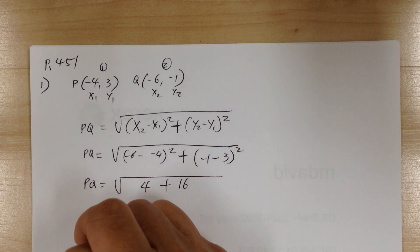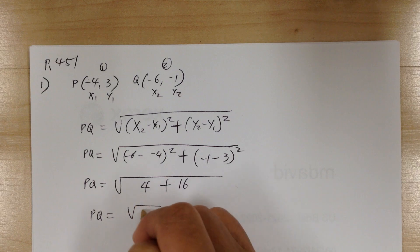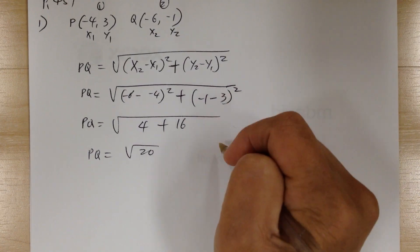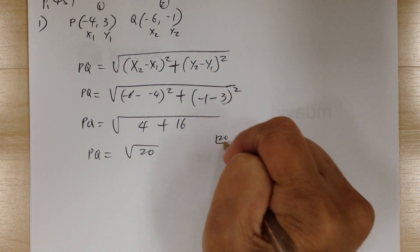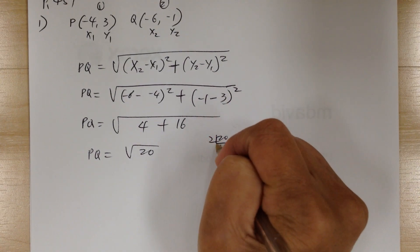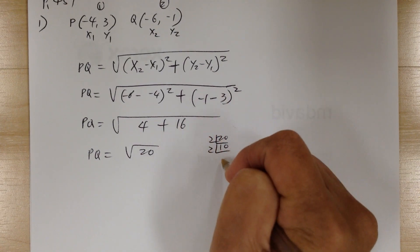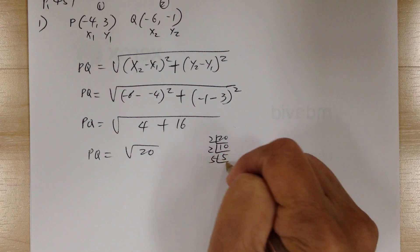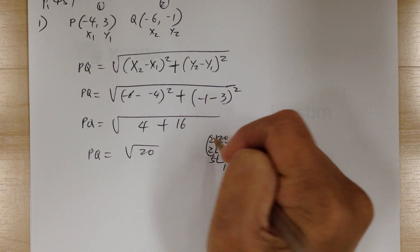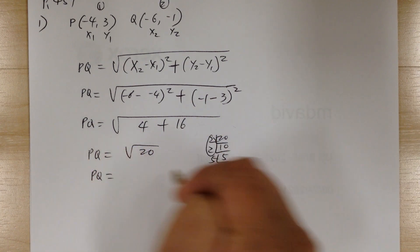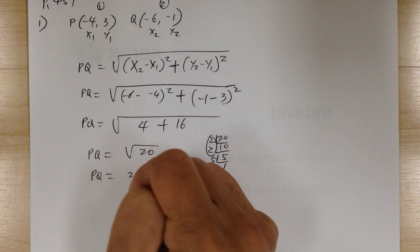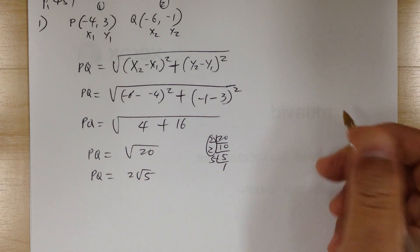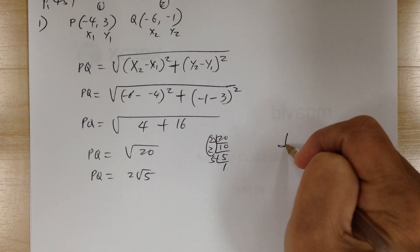So the distance between P and Q would be the square root of 20. To simplify that, I'll break it down: P and Q equals 2 square root of 5. So the answer would be D.